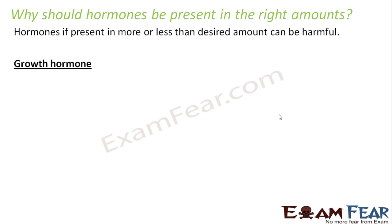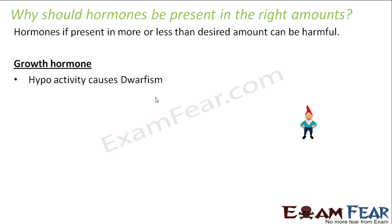Let us talk about the growth hormone. Which endocrine gland secretes the growth hormone? The pituitary gland. Hypo means less and hyper means more. So if growth hormone is secreted in less than the required amount, it will cause dwarfism. Dwarfism means the person did not grow much — they will remain very short with short arms, short legs, everything short.